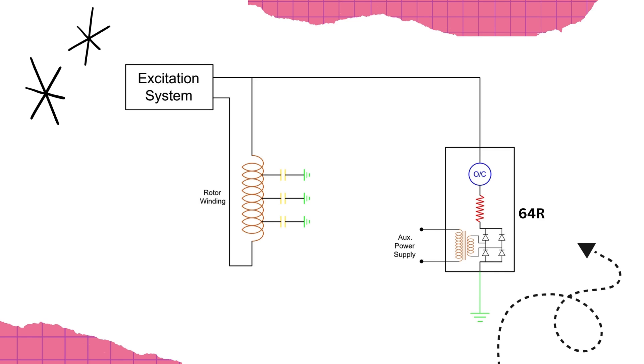As previously stated, the rotor body is always grounded. As you may observe, a closed loop is created between the rotor winding and the relay circuit.